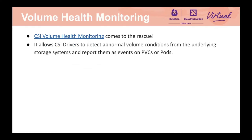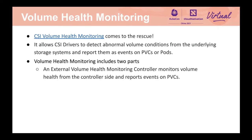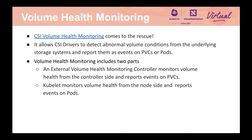Without volume health monitoring, Kubernetes has no knowledge of what happened to the underlying volumes on the storage system after a PVC is provisioned and used by a pod. With this feature, a CSI driver can communicate with the storage system and find out what happens to the volumes and communicate back to Kubernetes, so Kubernetes can report events on PVCs or pods if volume conditions become abnormal. This feature includes two parts: an external volume health monitoring controller that is a sidecar deployed with the CSI driver to monitor volume health from the controller side, and it reports events to the PVC when an abnormal condition is detected. Kubelet also monitors volume health from the node side and reports events to the pod when an abnormal volume condition is detected.